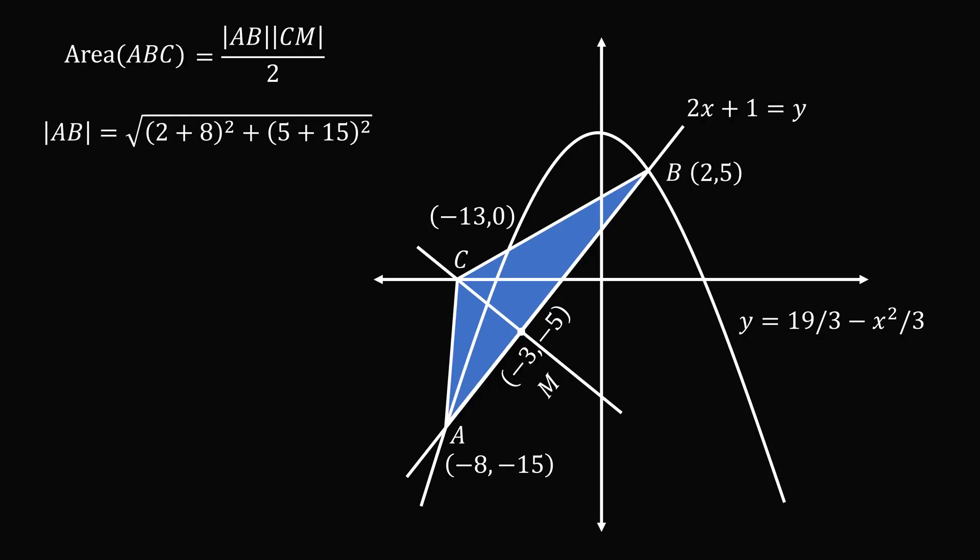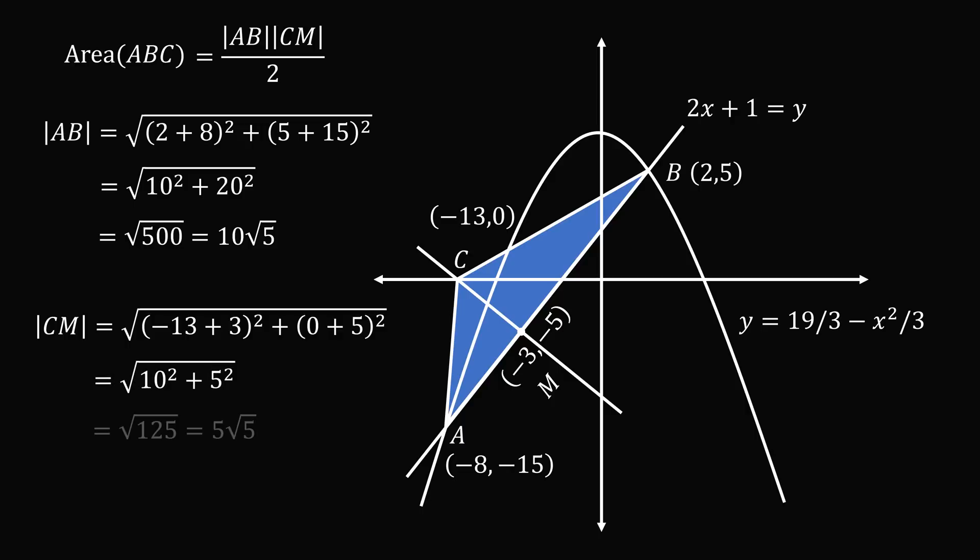So we'll first calculate the length of AB. It'll be the square root of the quantity 2 plus 8 squared plus the quantity 5 plus 15 squared. This works out to be the square root of 500 which equals 10 root 5. We now use the distance formula to figure out the length of CM. We go through these steps and we get that CM equals the square root of 125, and that equals 5 root 5.